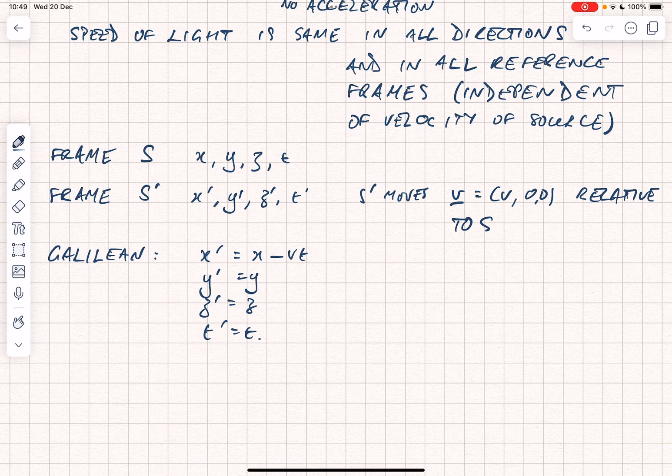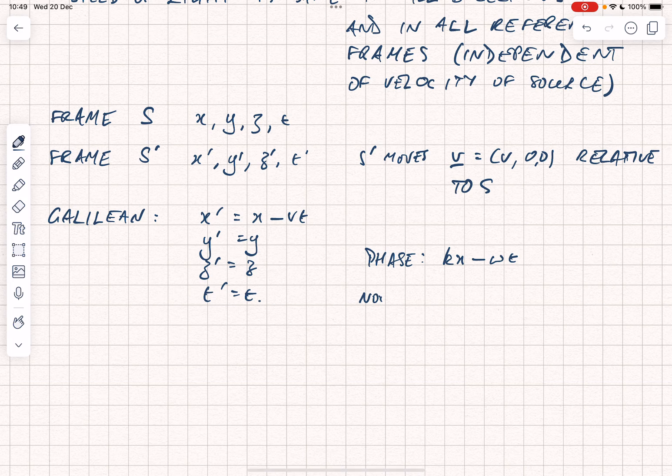One simple illustration you can do is to think about the phase. So, the phase of a wave is given by, if it's travelling along X, is given by KX minus omega T. That's a number. It's a number which is related to the number of peaks in a wave going past, or that kind of thing. And you can find the phase of the wave by counting peaks as they go past you. So, a number, a number of peaks cannot change when you change from reference frame to reference frame.